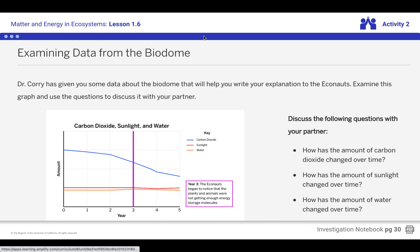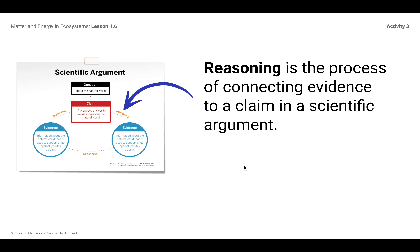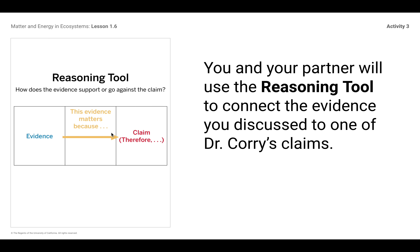In Lesson 1.6, Activity 2, there's a picture of this graph that you can use. Then go to Activity 3 — there's a reasoning tool on that screen with a place for you to write evidence. For the evidence, please don't just write 'the graph shows me.' Tell me exactly what evidence you're using from the graph, because our two claims were either a change in sunlight or a change in carbon. Describe what you see on that graph, then tell me why that evidence matters.